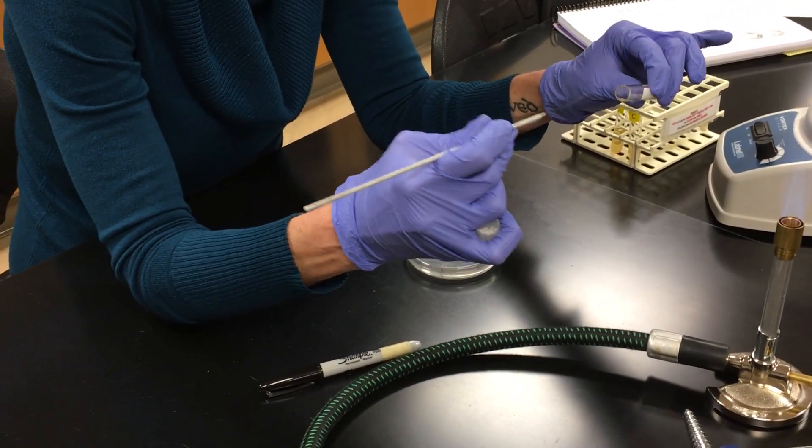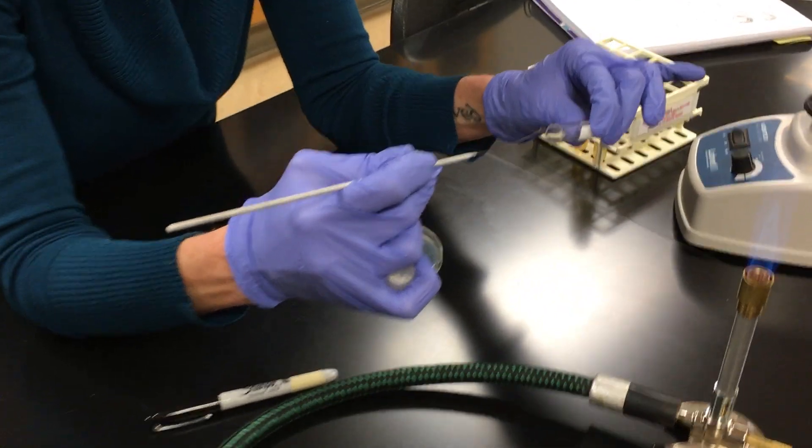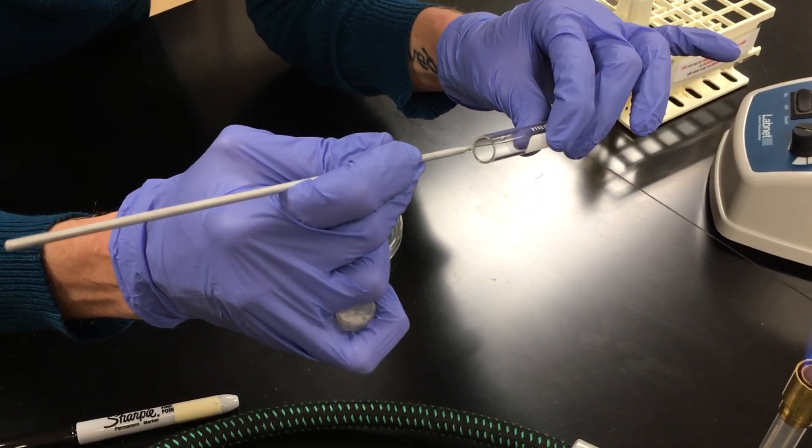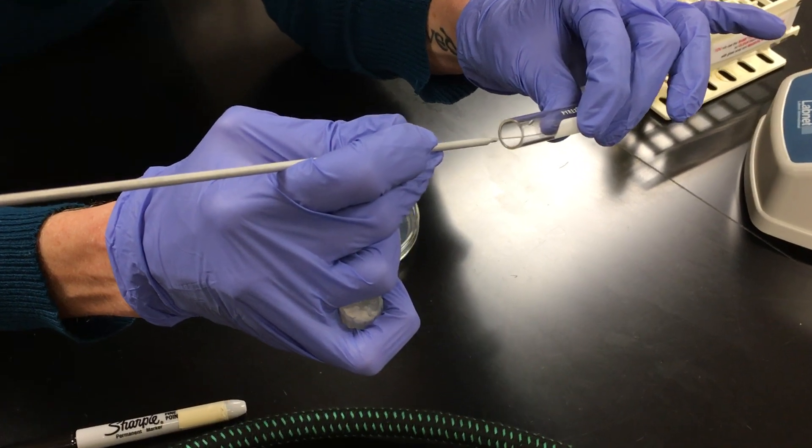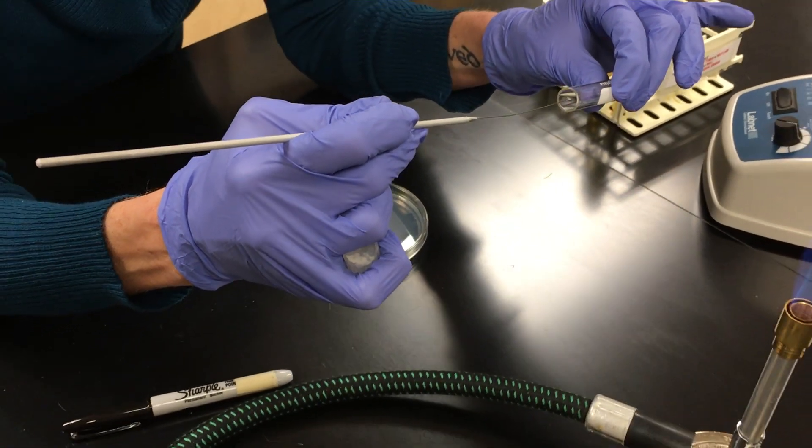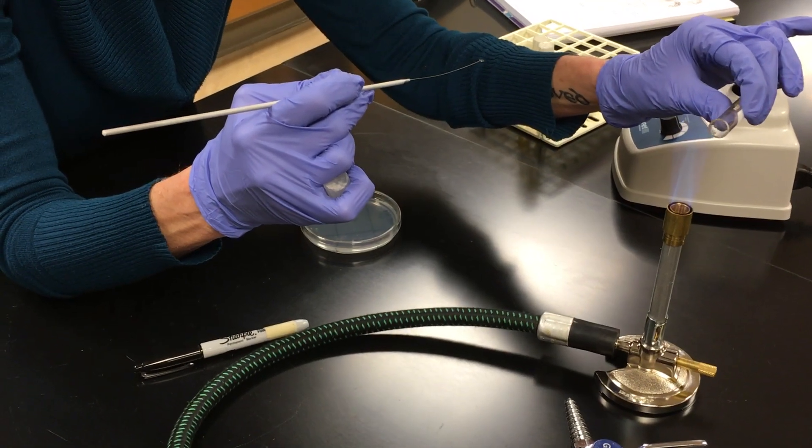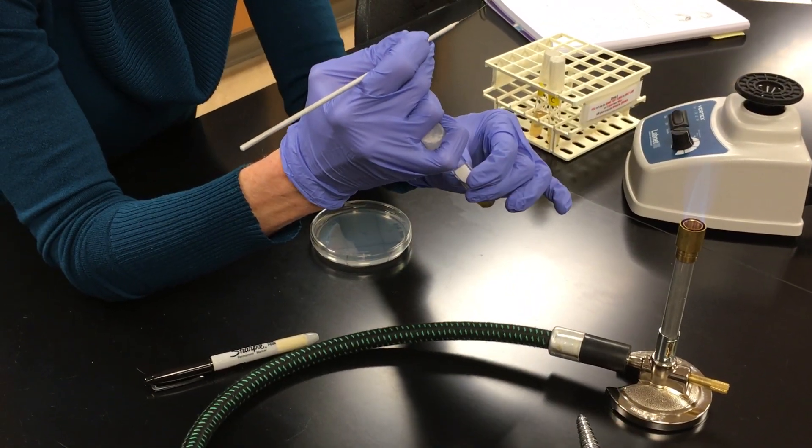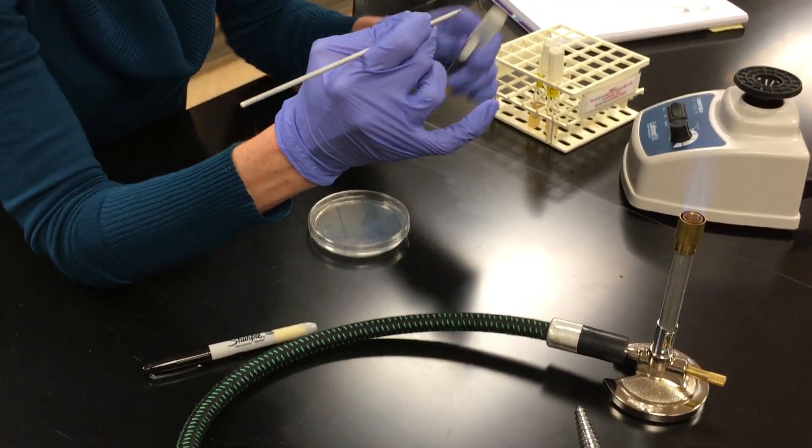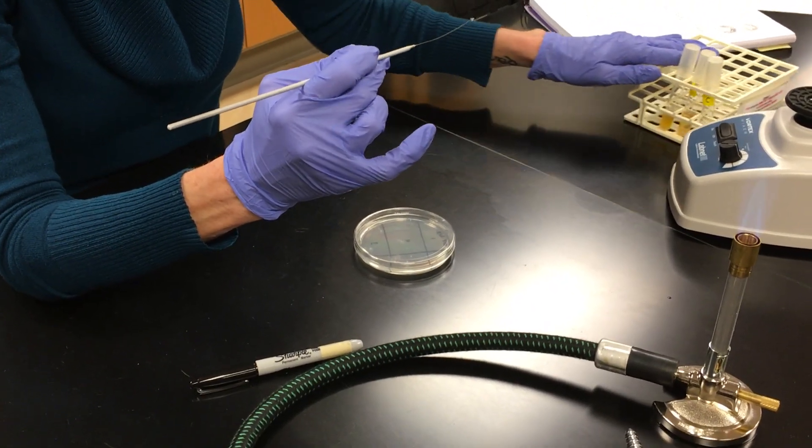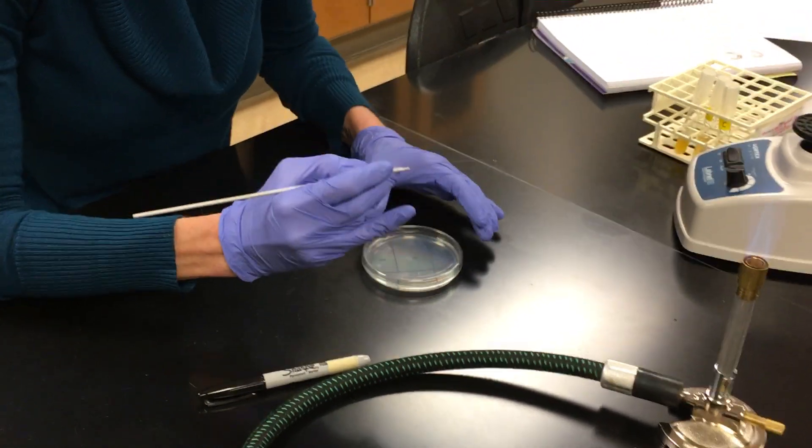And what you want to do is you want to put the loop of the needle into the culture without touching the sides of the tube. And you want to get yourself a loop full of culture. So I have a loop full. And now I'm going to reflame the culture tube. And then I'm going to put the cap back on. I'm going to put it in the test tube rack. And I'm going to move this away, because I'm never going to go back into that again.